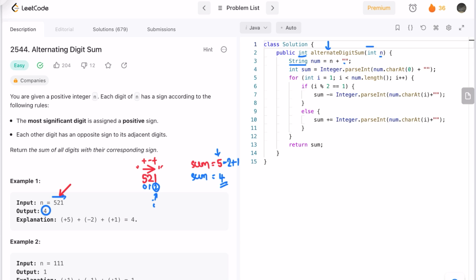So num is now having the value 521 as a string for this example. And I'm declaring a variable sum of integer data type and initializing it with the 0th character and converting it to an integer. So I'm accessing 5 and converting it to an integer and storing it inside sum.